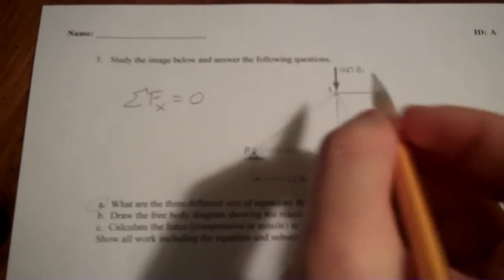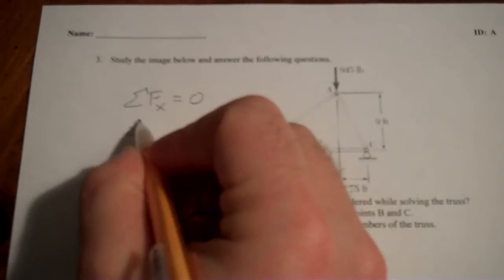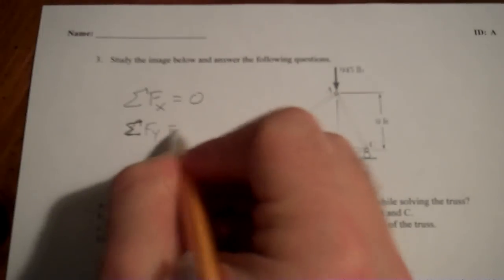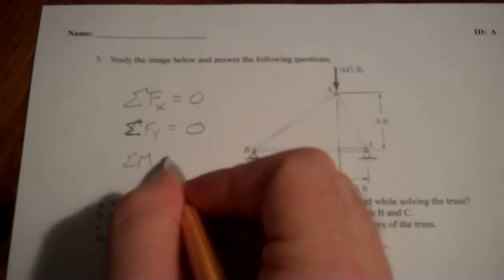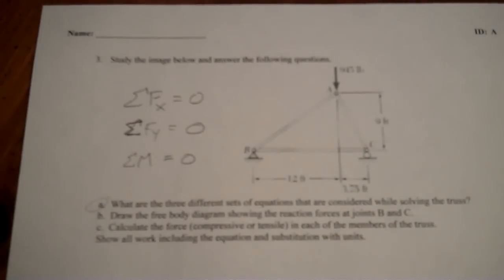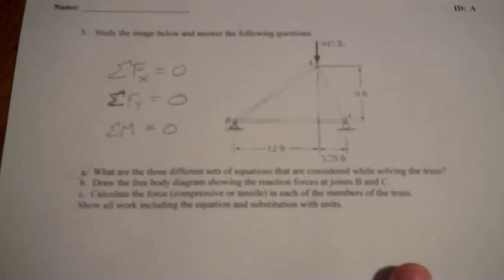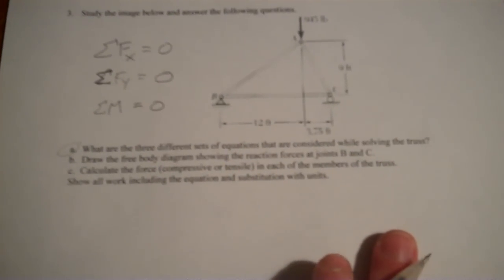So if it's not moving, then sum of the forces in the X are going to be zero. The sum of the forces in the Y are going to be zero. And the sum of all the moments is going to be zero. Everything is zero. Everything adds up to zero. This thing is not moving. If it is, well, that bridge has a serious problem.